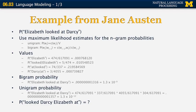Now let's estimate the probability of the sentence 'Looked Darcy Elizabeth at.' The unigram probability for this scrambled sentence is going to be exactly the same as for the original sentence, because the unigram probability model doesn't take word order into account — there will be some reordering of the four numbers, but the product is exactly the same. However, the bigram probability will be several orders of magnitude smaller, because bigrams like 'Looked Darcy,' 'Darcy Elizabeth,' and 'Elizabeth at' are very unlikely to have appeared in the training data — so this probability may actually be zero.